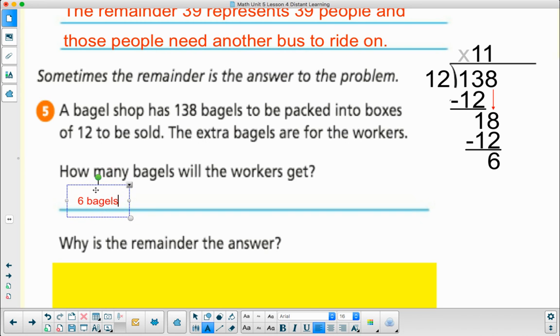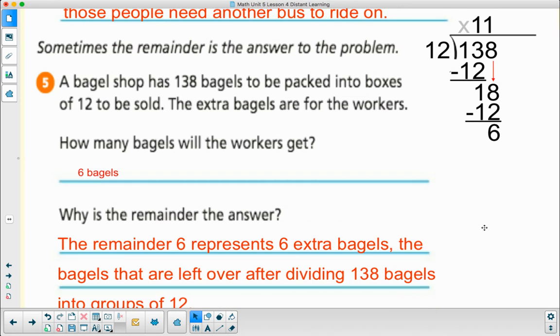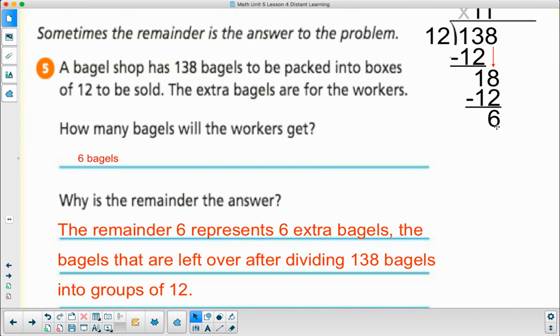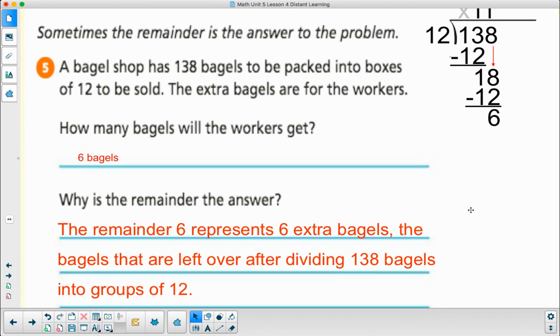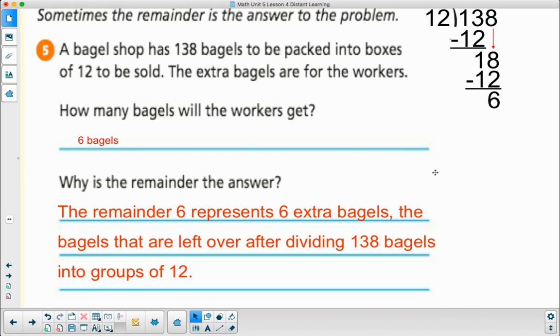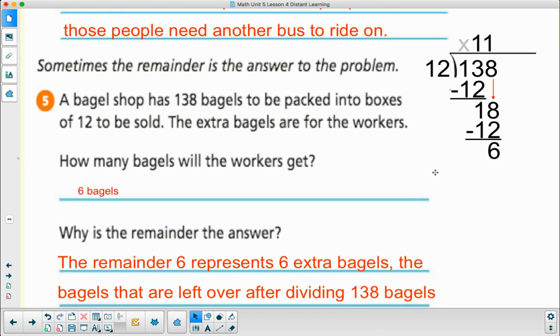So my answer is going to be 6 bagels. Why is my answer in my remainder? The remainder 6 represents 6 extra bagels, the bagels that are left over after dividing 138 into groups of 12. And that's what we want. Those are the ones that the workers get. The extra are what's left over.